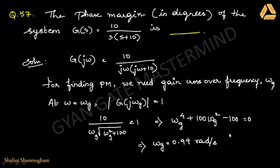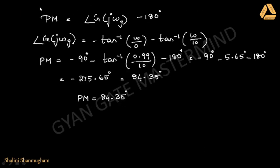At the gain crossover frequency, the magnitude of the open loop transfer function equals 1. On equating to 1, you get a quadratic equation. After solving, you get the gain crossover frequency as 0.99 radians per second. Using the phase margin formula — phase angle at gain crossover frequency minus 180 degrees — you get the phase margin as 84.35 degrees.